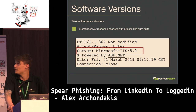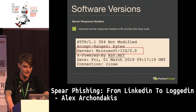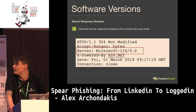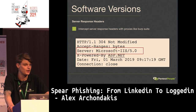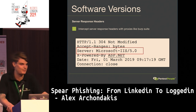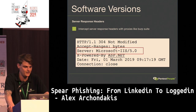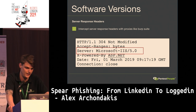Here's an example of a server response header caught from a web application using a tool called Burp Suite. We can see Microsoft IIS 5.0 — an incredibly ancient version with thousands of vulnerabilities associated with it, which is why I thought it would be a good example.